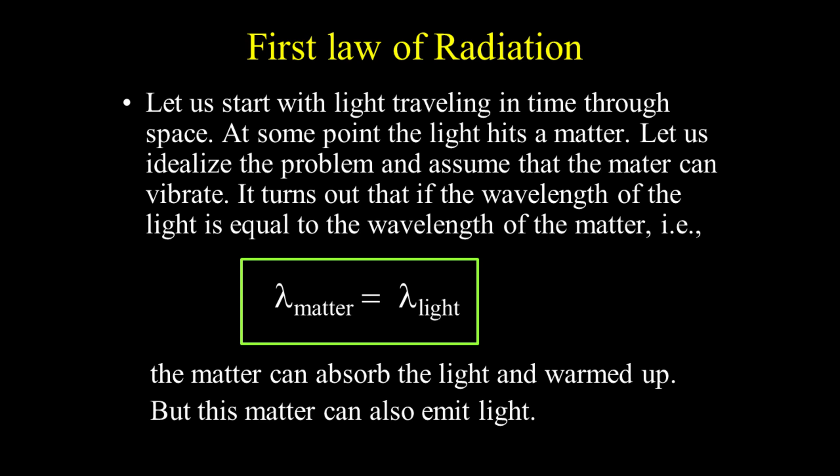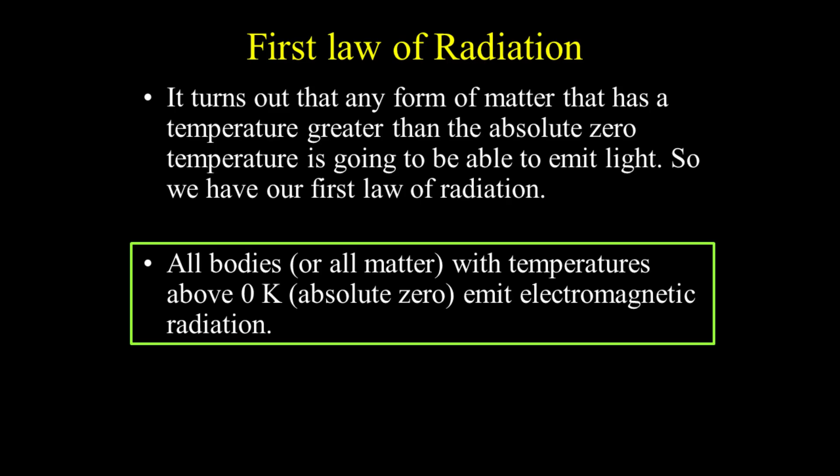If the wavelength of the light equals the wavelength of the matter, the matter can absorb the light and warm up. But this matter can also emit light. It turns out that any form of matter that has a temperature greater than absolute zero is going to be able to emit light. So we have our first law of radiation: all bodies with temperatures above zero degrees Kelvin emit electromagnetic radiation.